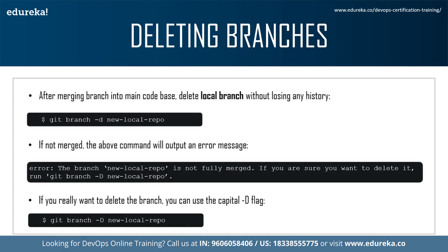Once you've finished working on a branch and merged it into the main codebase, you are free to delete the branch without losing any history. This is done with the command: git branch -d new-local-repo. However, if the branch hasn't been merged, this command will output an error message saying the branch is not fully merged. If you really want to delete it — for example, a failed experiment — you can use the capital flag: git branch -D new-local-repo, which deletes the branch regardless of its status and without warnings.